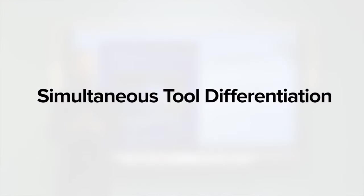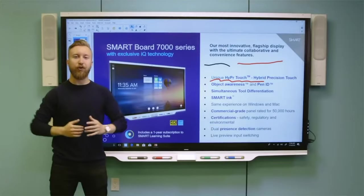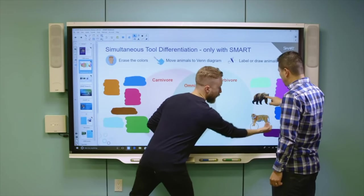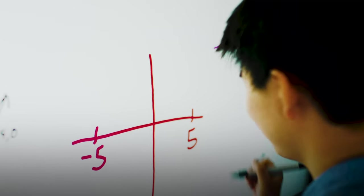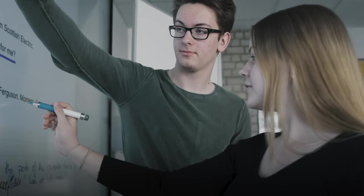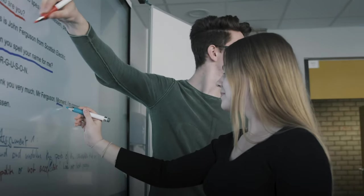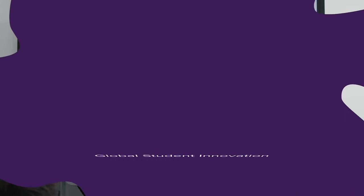Want to learn more? For on-site PD options, click the link below. Now over to Jaron to demonstrate what makes our 6000 series such a teacher and student favorite. Smart has the only interactive display on the market that allows educators and students to interact without interruption — simultaneous tool differentiation — so students can write, erase and move objects all at the same time. As first to market with Pen ID, writing can happen in different colors anywhere, with the ability to easily differentiate between each student's work. It's the perfect blend of collaborative features.